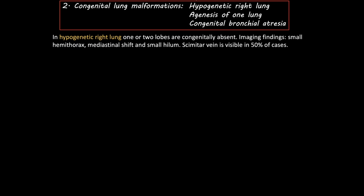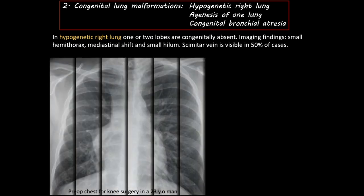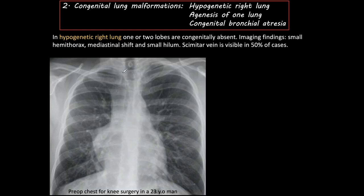In hypogenetic right lung, one or two lobes of the right lung are congenitally absent. The imaging findings are a small hemithorax, mediastinal shift, and a small hilum. The scimitar vein is visible on plain film in about 50% of cases, so if you suspect this abnormality you have a 50-50 chance of diagnosing it on the plain film. Here is another case — also a hypogenetic right lung with small right hemithorax, mediastinal shift, apparent slight dextrocardia, and especially the abnormal vein, which if you see it clinches the diagnosis.